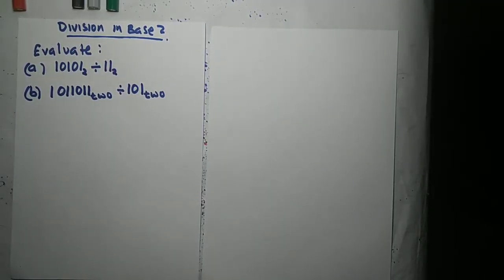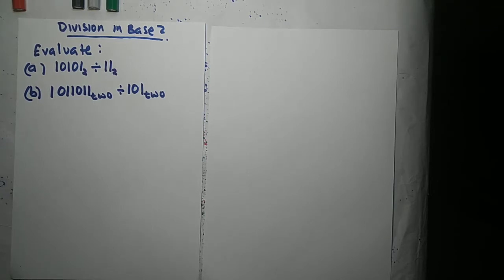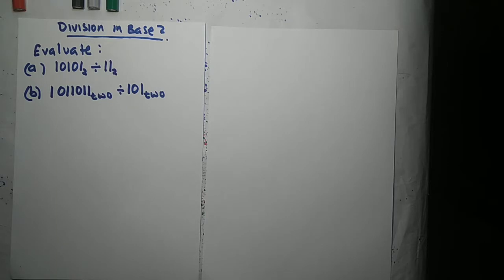Hello friends. In this lesson I want to show you how to divide numbers in base 2. When you are dividing numbers in base 2, there's one thing you need to understand: in base 2 we only have two numbers, 0 and 1. If a number can go into another number then it goes in once, and if it can't then it's zero.